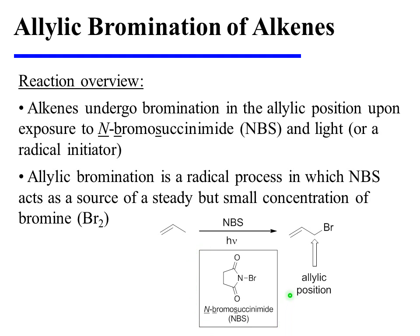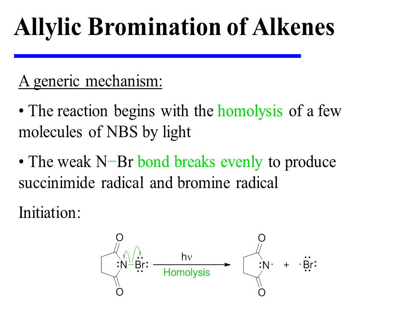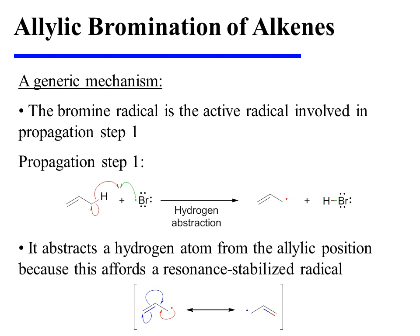The structure of NBS is shown here. The reaction begins with the homolysis of a few molecules of NBS by light. The N-Br bond breaks evenly to produce succinamide radical and bromine radical. The bromine radical is the active species involved in propagation step 1 — it abstracts a hydrogen from the allylic position of the substrate, affording an allylic radical as well as HBr.